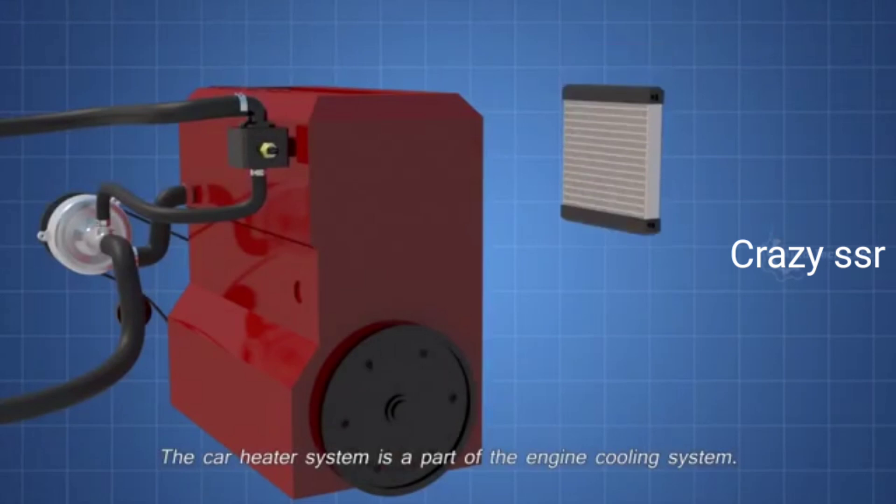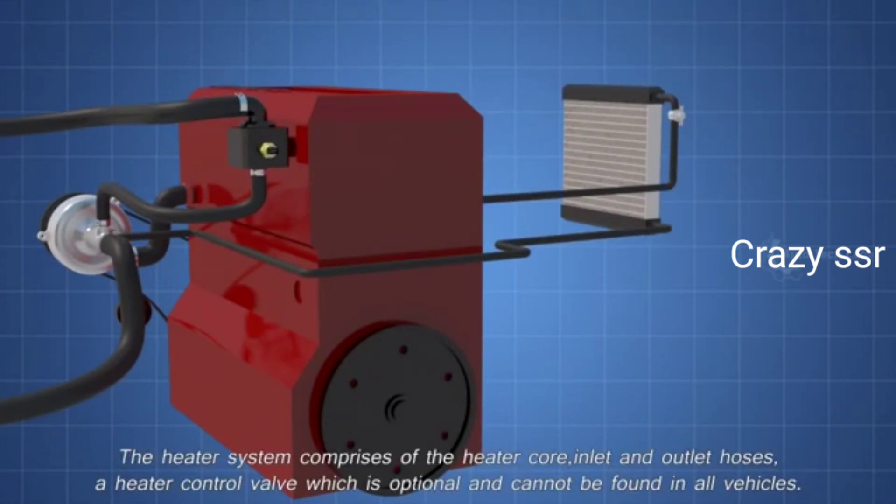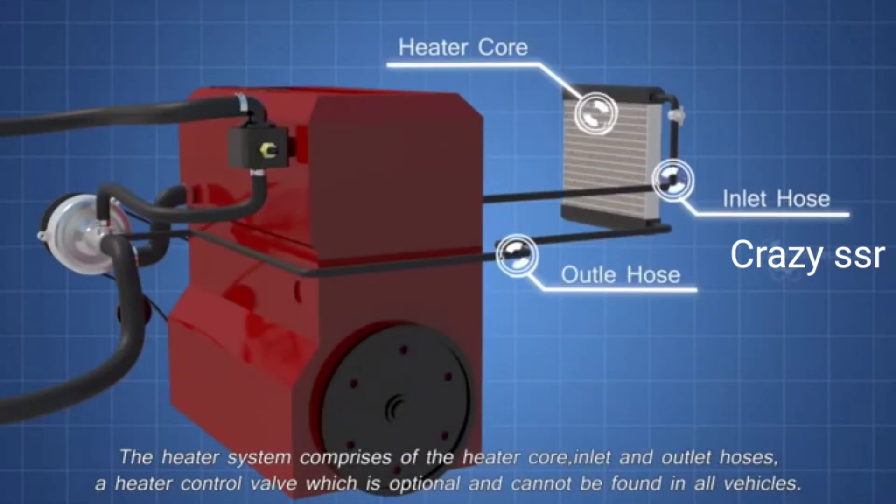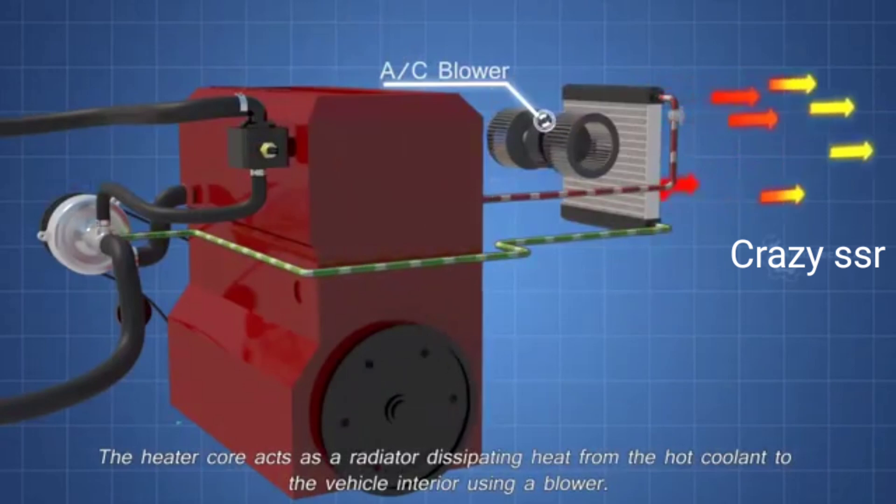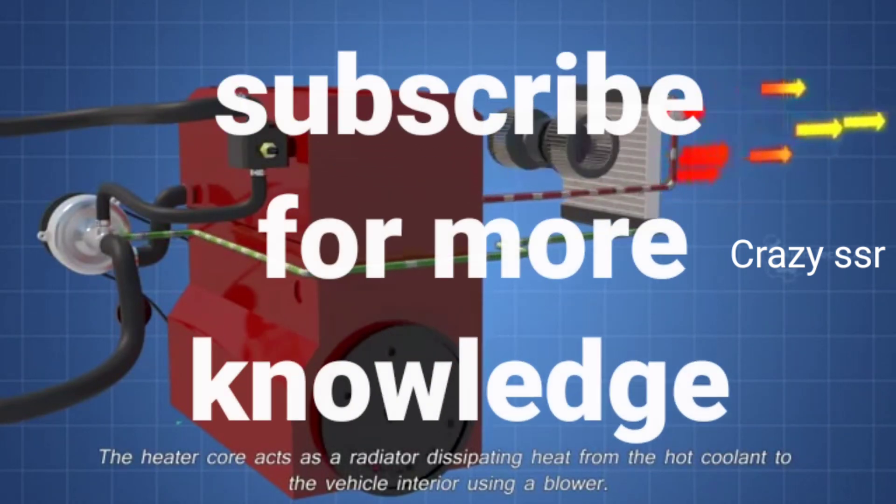The car heater system is a part of the engine cooling system. The heater system comprises of the heater core, inlet and outlet hoses, a heater control valve which is optional and cannot be found in all vehicles. The heater core acts as a radiator, dissipating heat from the hot coolant to the vehicle interior using a blower.